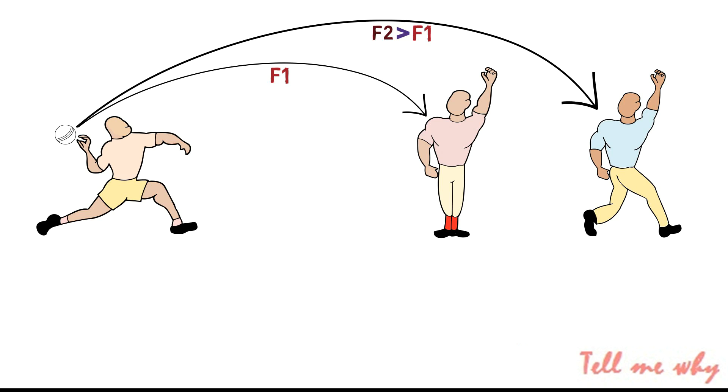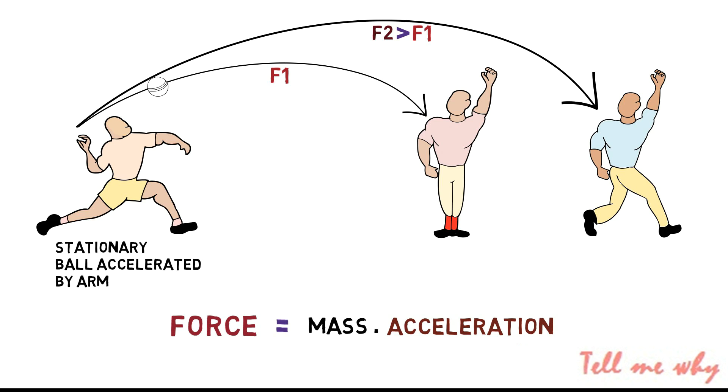You do that because once you let go of the ball, the force from your arm disappears. A force F is something that accelerates a mass M. Your arm takes a stationary mass, the ball, and accelerates it, and then you let go of it.